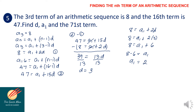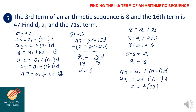Now to find the 71st term, using the formula: a sub 71 equals 2 plus (71 minus 1) times 3, which gives 2 plus 70 times 3, equals 2 plus 210. Therefore, a sub 71, the 71st term, is equal to 212.